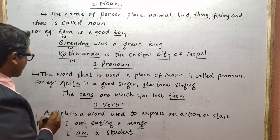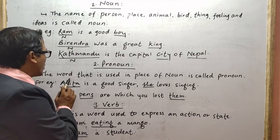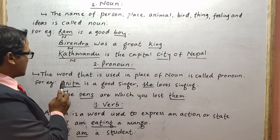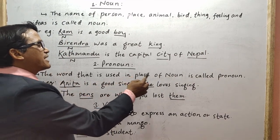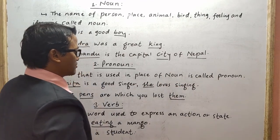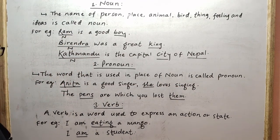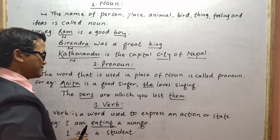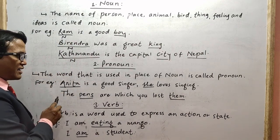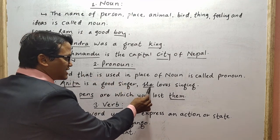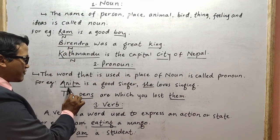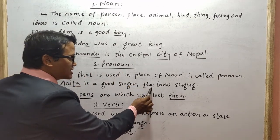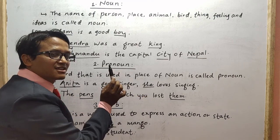Now let's go to pronoun. What is a pronoun? The word that is used in place of a noun is called a pronoun. For example: 'Alita is a good singer. She loves singing.' The noun is 'Alita,' and the word 'she' is used in place of Alita. So 'she' is the pronoun here.